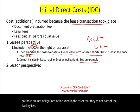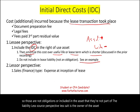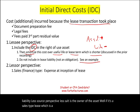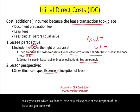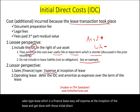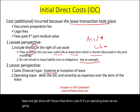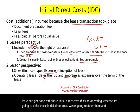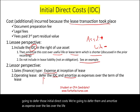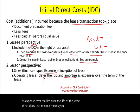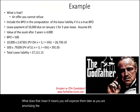From the lessor's perspective — the lessor is the owner of the asset — if it's a sales-type lease (a finance lease), we expense the initial direct costs at the inception of the lease. If it's an operating lease, we defer those initial direct costs and amortize them as expense over the life of the lease. That means you expense them later, gradually, as you amortize. The best way to understand this is to look at an example.